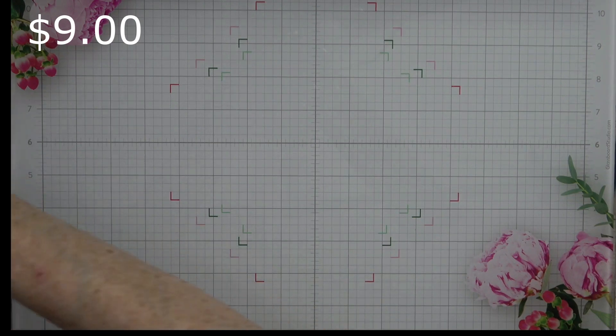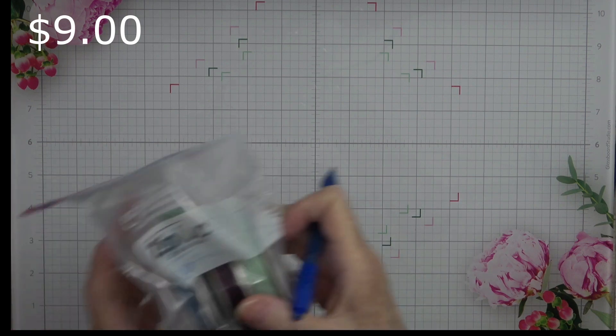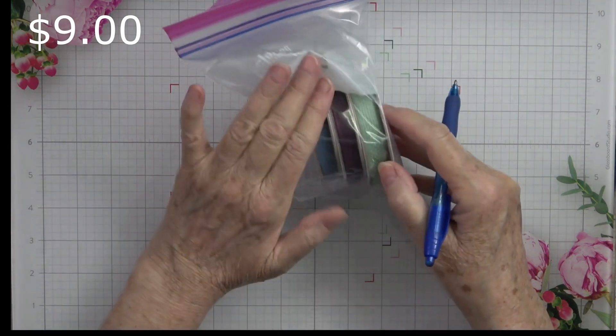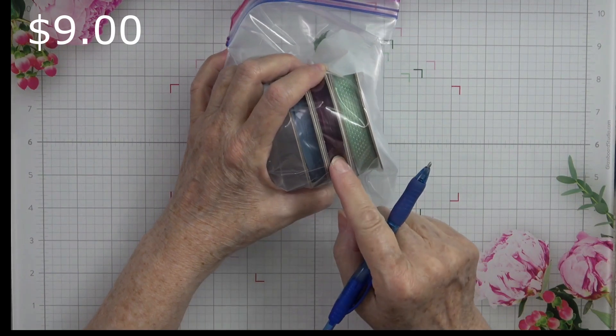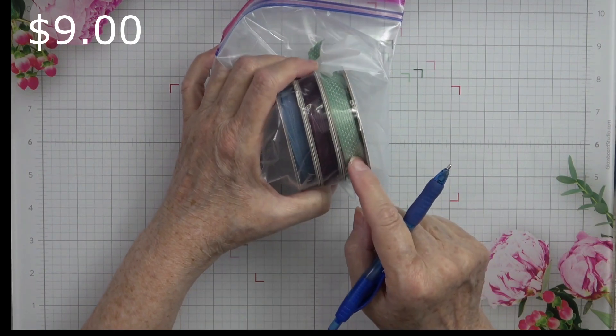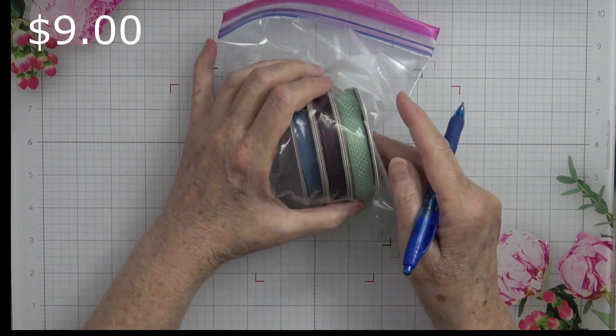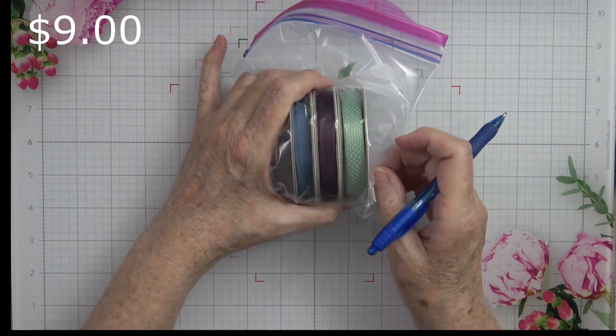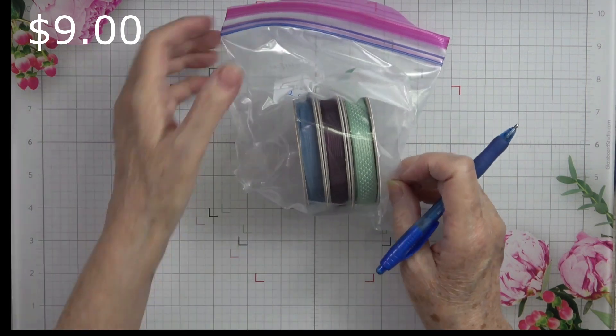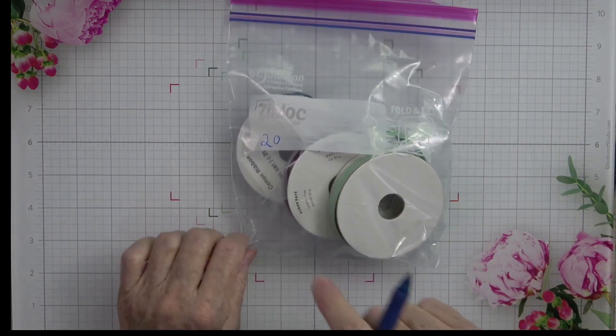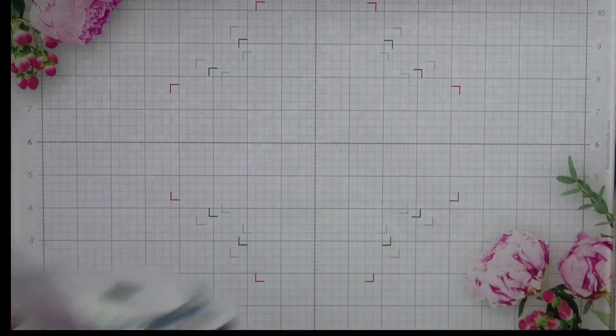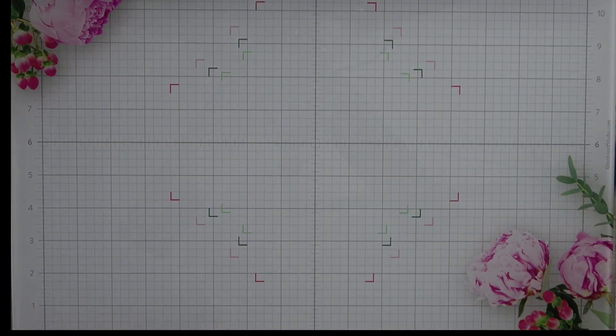And last, but not least, is number 20. This one has misty moonlight, blackberry bliss, and a very pretty soft green. That looks like it might be soft succulent. This is very, very pretty ribbon. Number 20, nine dollars. That concludes my ribbons. I hope you've enjoyed this.